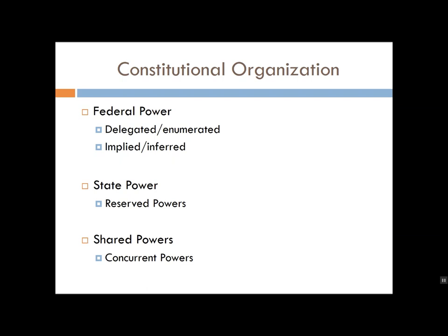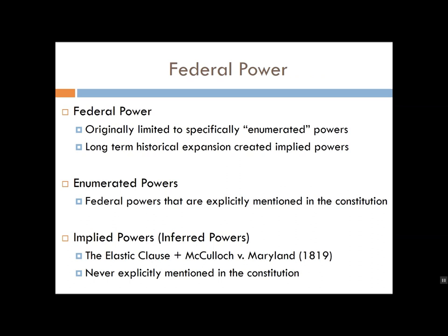Remember that gradual increase in federal powers. Over time, the federal government has been getting stronger — its powers have tended to become increasingly expansive, encroaching into territories which theoretically should be, and historically have been, handled by the states. This gradual expansion of federal power relative to the power of states is the second major historical trend in the development of American federalism that you need to be familiar with.